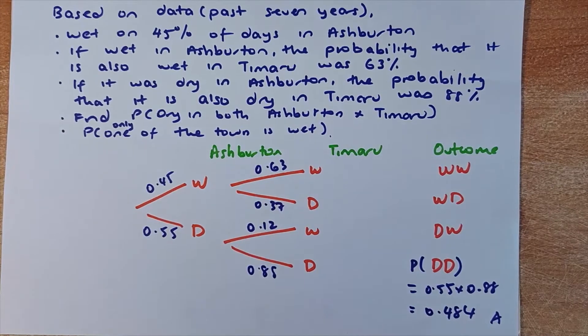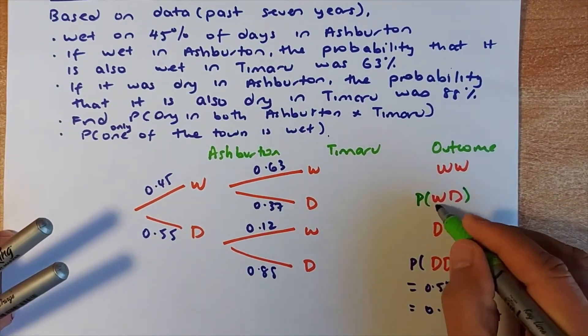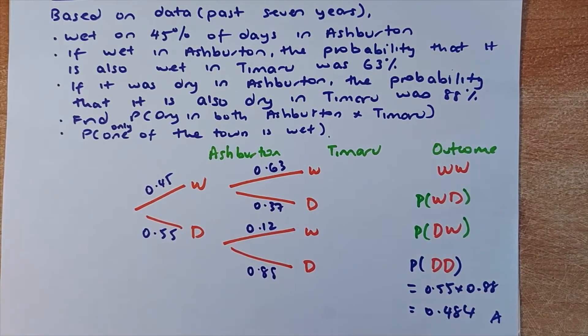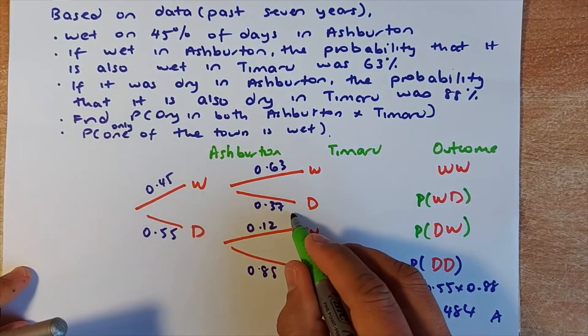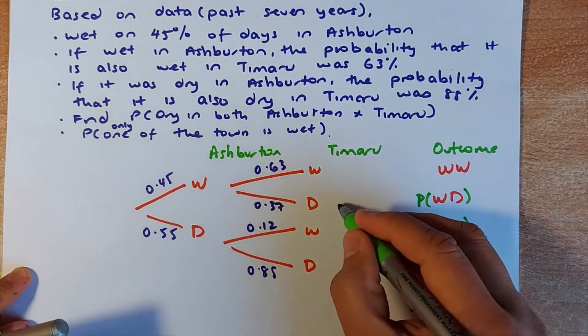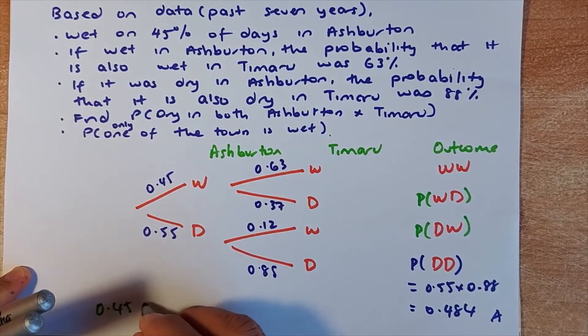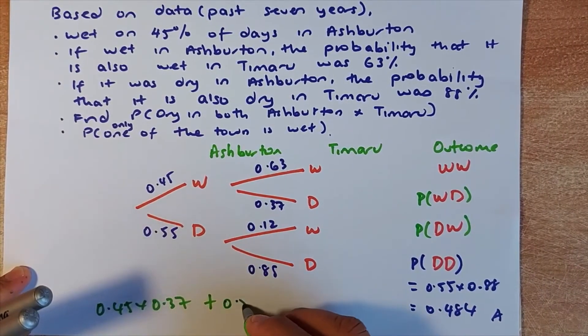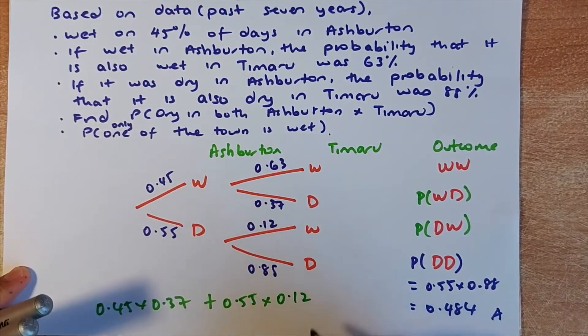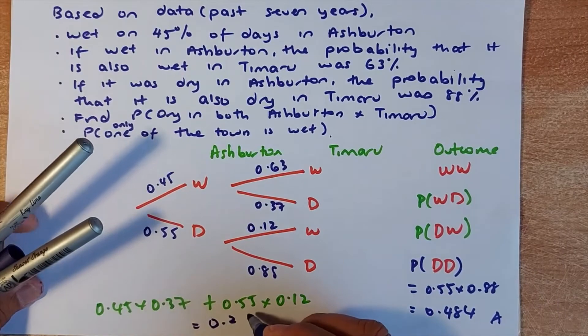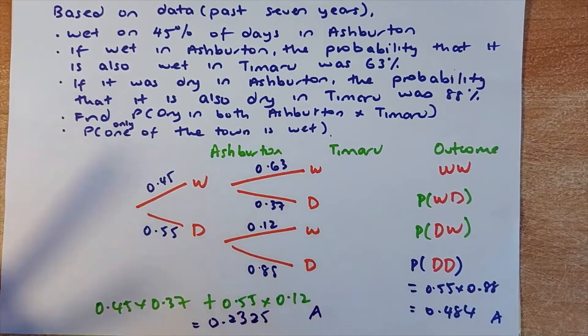Now we're going to look at the second question. Find one of the town is wet. So to get wet, it's either Ashburton is wet and Timaru is dry, or Ashburton is dry and Timaru is wet. So you're going to add the probability 0.45 multiplied by 0.37, or add them up, Ashburton is dry 0.55 multiplied by Timaru wet 0.12. Put in your calculator and then your answer is 0.2325. And again, that is an achieve.